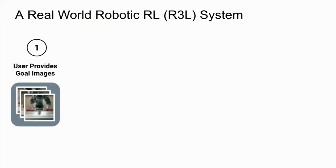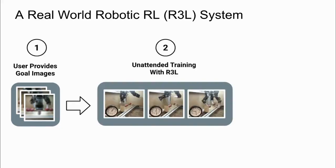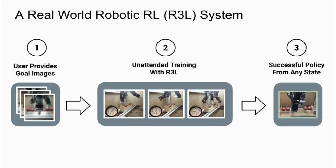Putting it all together, we have a real-world robotic RL system which can learn tasks in environments without instrumentation or intervention. To train the system, the user just has to provide success images of the task to be completed, and then can leave the system to train unattended. The perturbation controller allows the learned policy to successfully evaluate from any initial configuration.